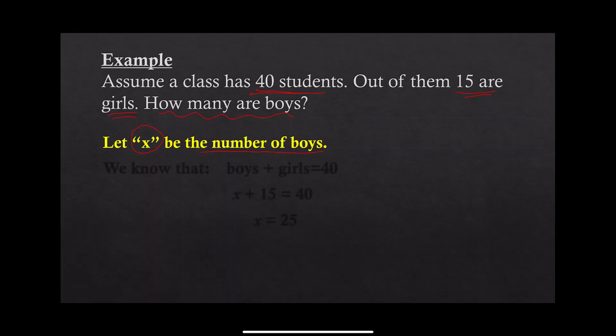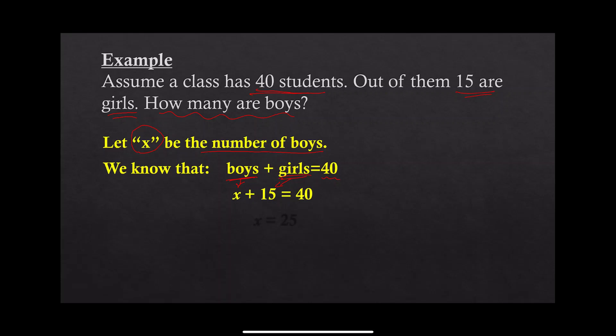What do we know about the total number of students? We know that boys plus girls equals 40. We will replace boys with its variable — since we don't know it, it's x — and replace girls with the number we know, which is 15. So the equation becomes: x plus 15 equals 40.